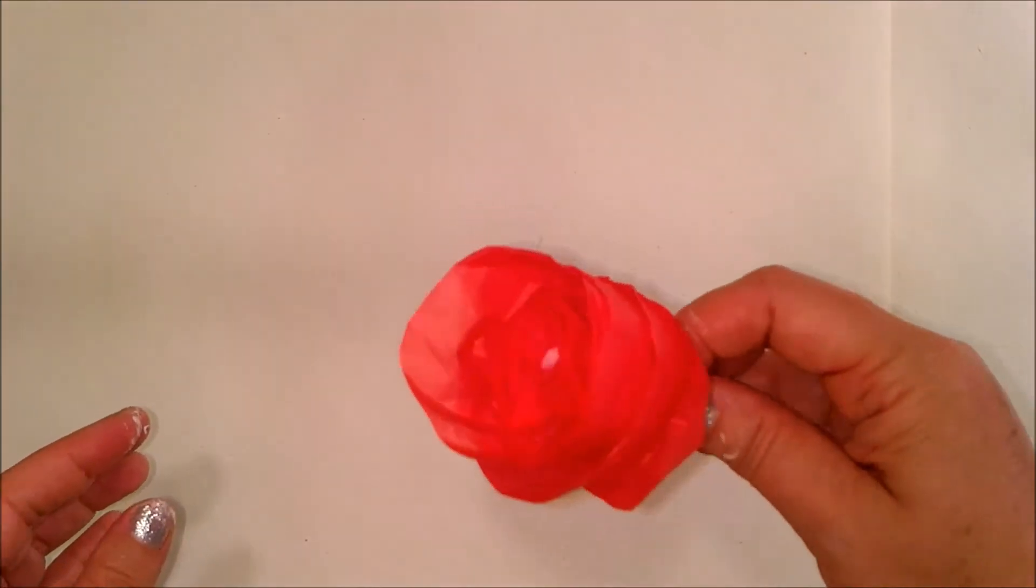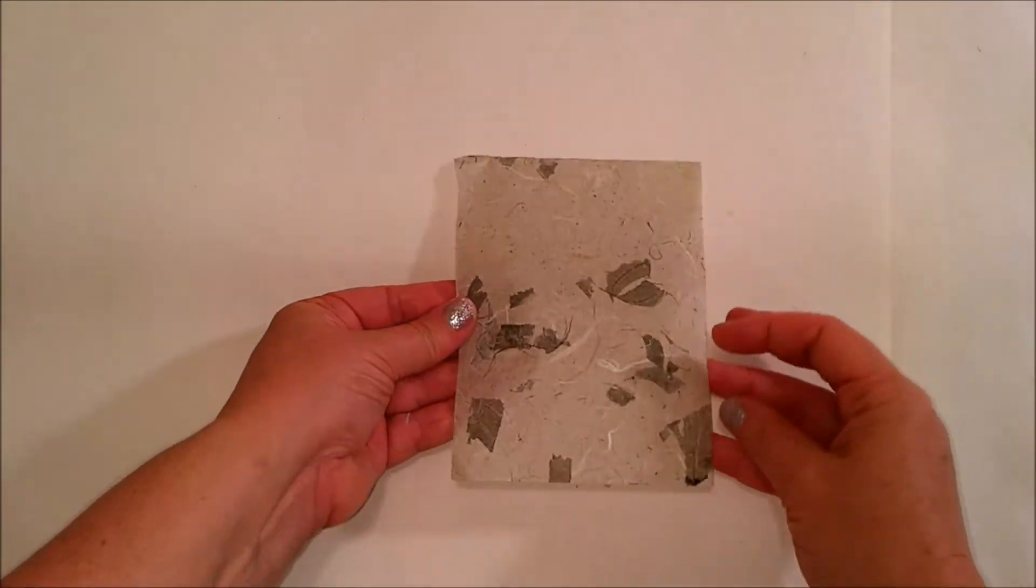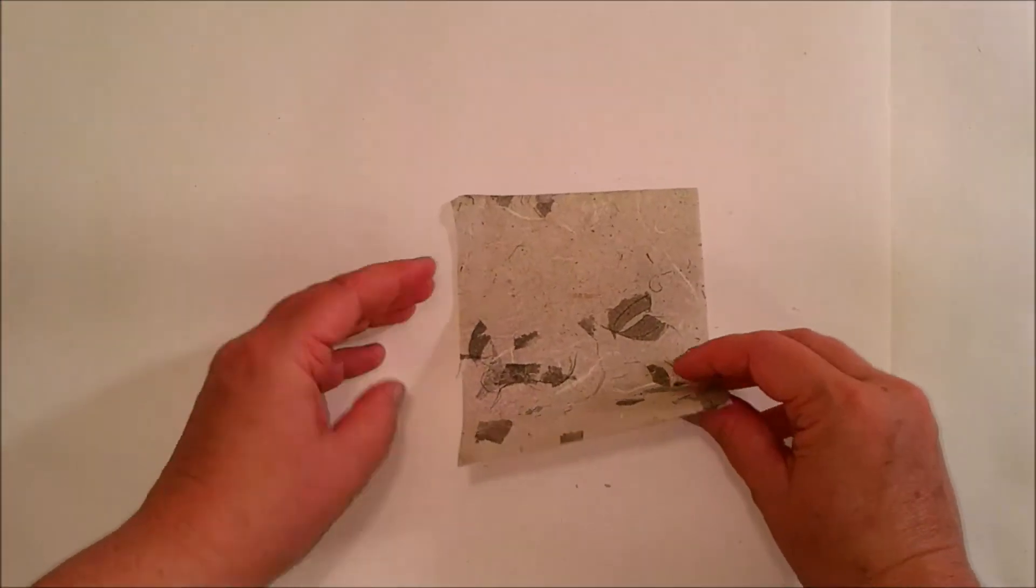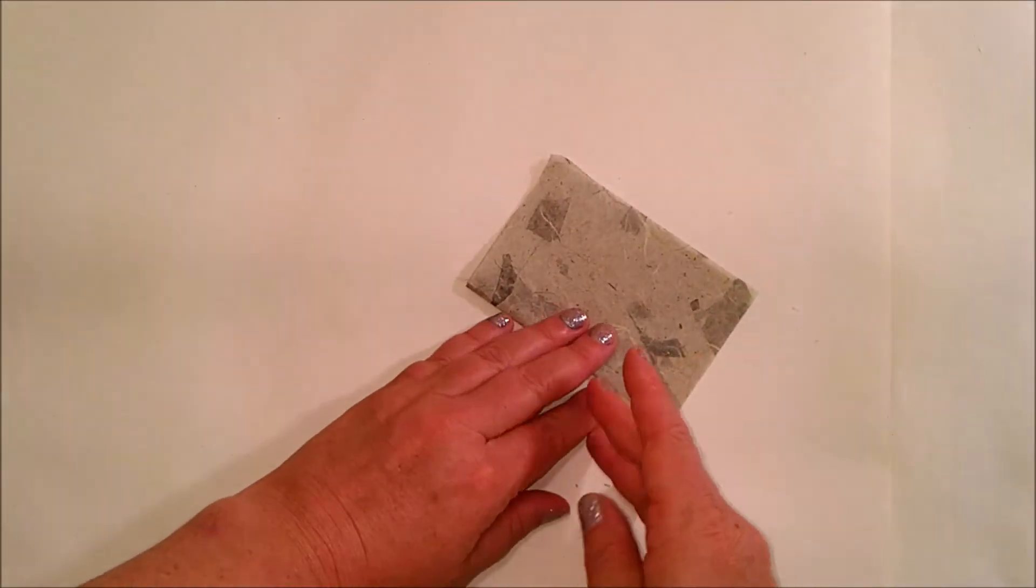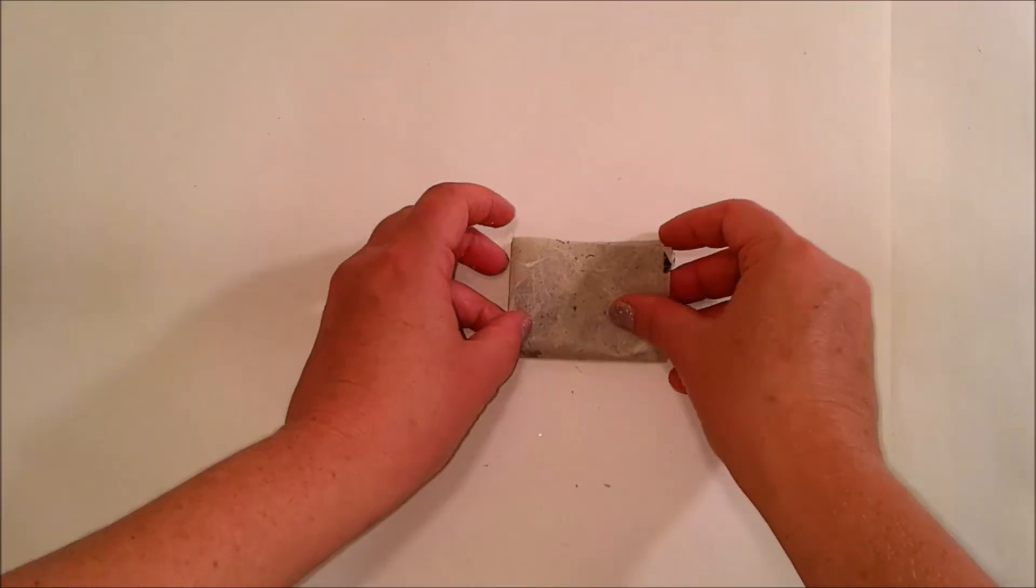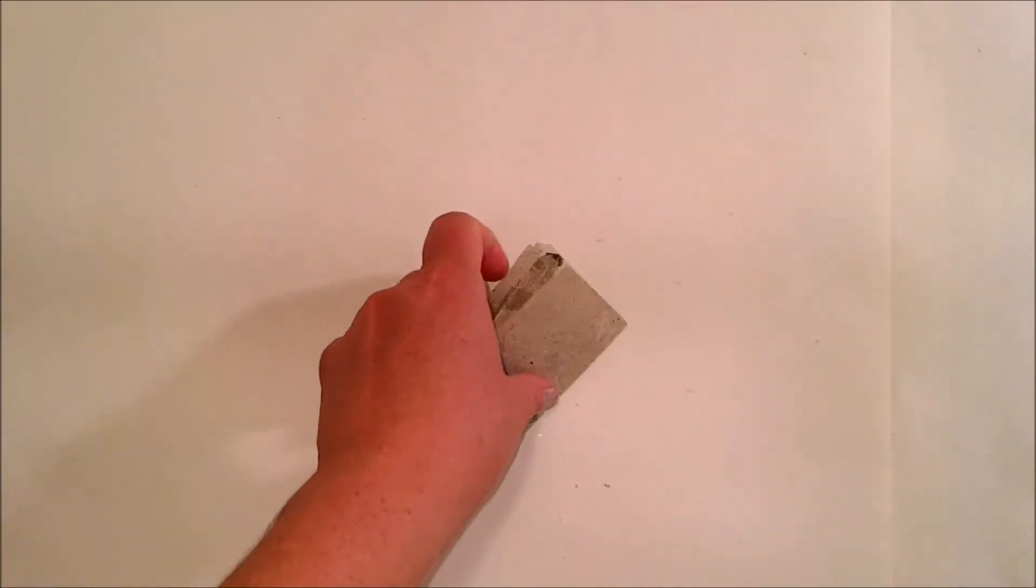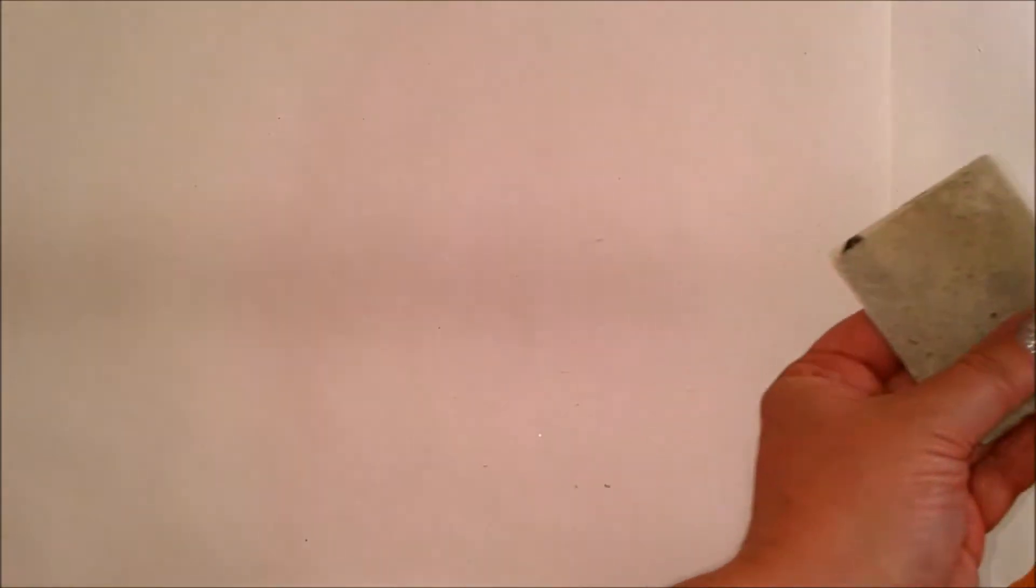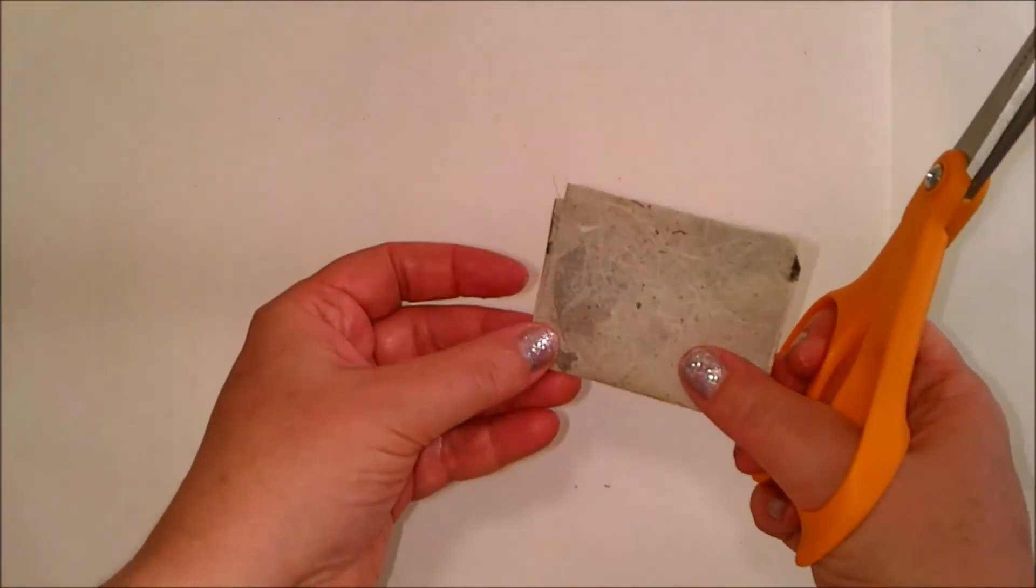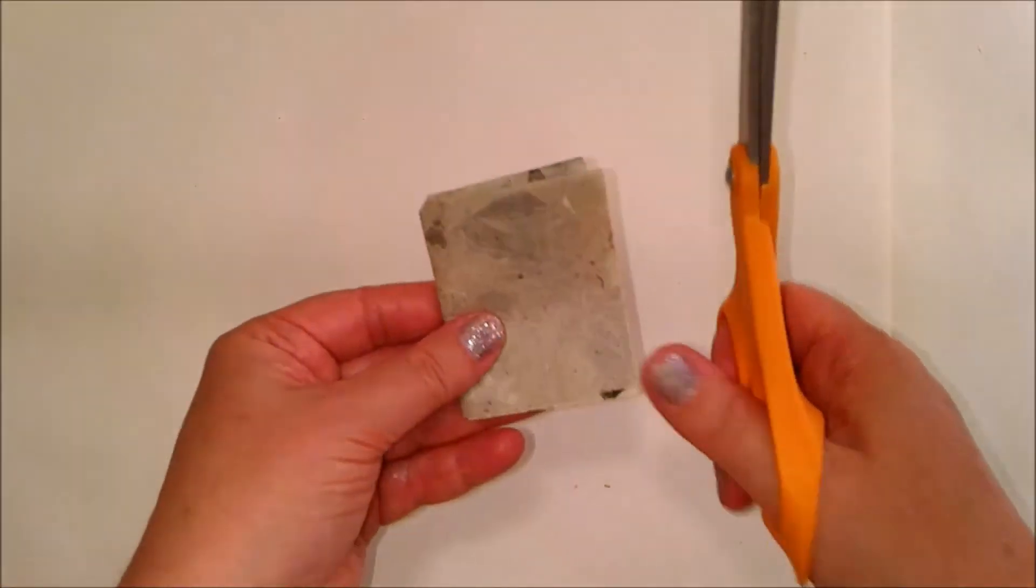While the rose is drying for a few minutes, I'm going to put it aside. Take out our piece of paper. This is about a quarter of the 8.5 by 11 sheet. Fold it in half. Fold it in half again. Snip off a tiny corner and I'm going to cut a leaf shape out of it.